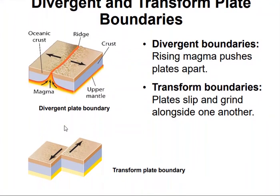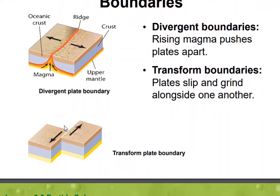At transform boundaries, when two plates meet, they slip and grind alongside one another, forming a transform plate boundary. The friction between plates at transform boundaries will often cause earthquakes. For example, the Pacific plate and the North American plate rub against each other along California's San Andreas Fault, and that's the origin of many of North America's most severe earthquakes — because that is a major fault.